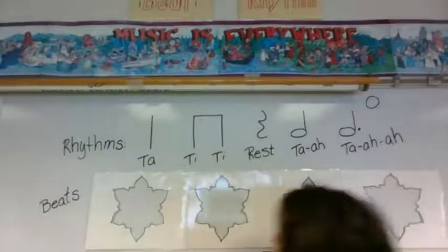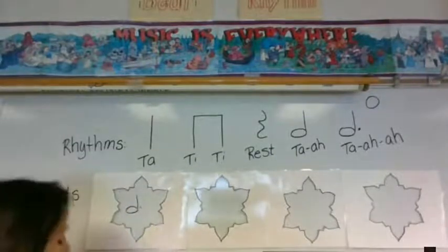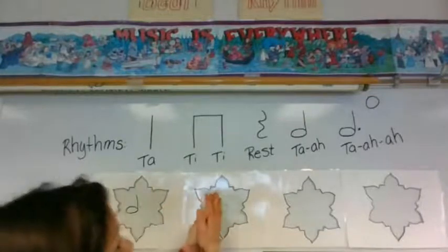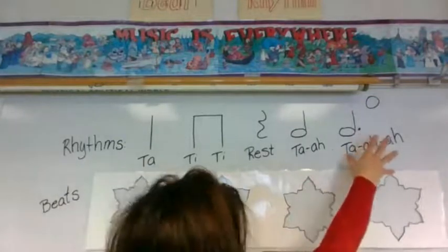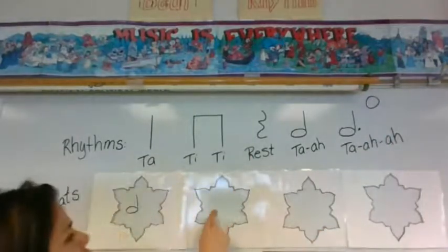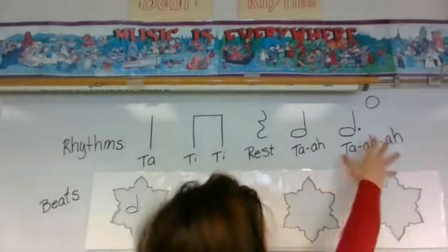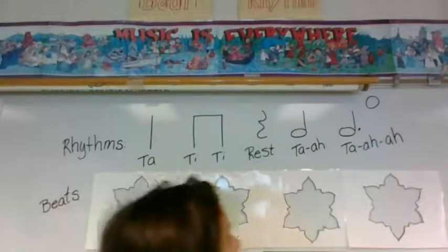So if it was drawn here, you would clap once and hold it for three beats. It's a three beater. Ta-a. If it was drawn here, you would say ta-a, but it's a three beater. It takes up three snowflake beats.